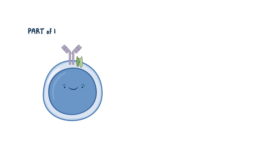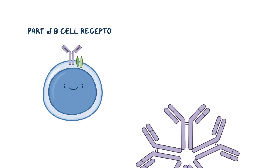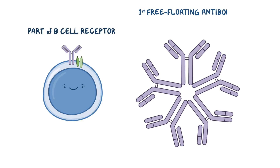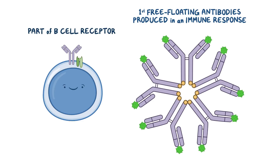For example, IgMs are part of B-cell receptors and are the first free-floating antibodies produced in an immune response. They are secreted as a pentamer, meaning there are five antibodies connected together, which provides a ton of binding sites for grabbing antigens and taking them out of the blood. Each antibody has complement protein binding sites on the heavy chains, so these IgM pentamers are also great at activating complement proteins, which help destroy and remove pathogens.